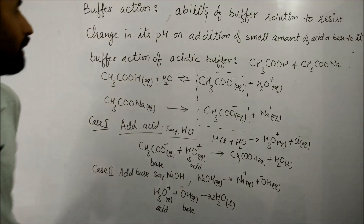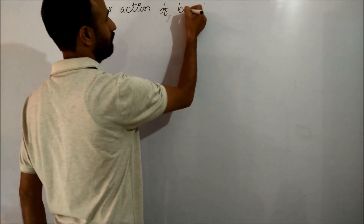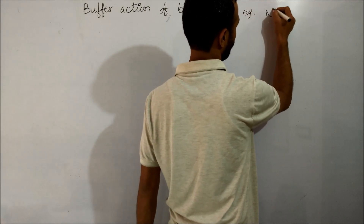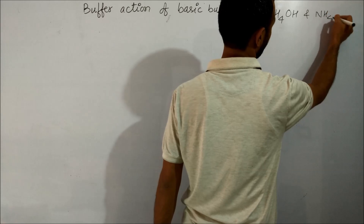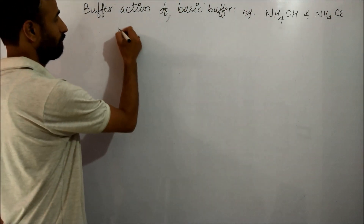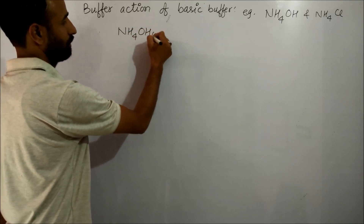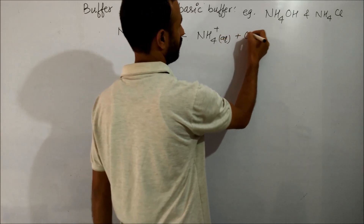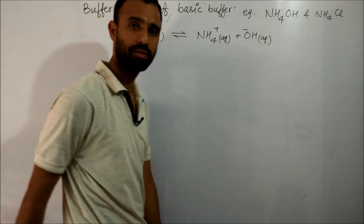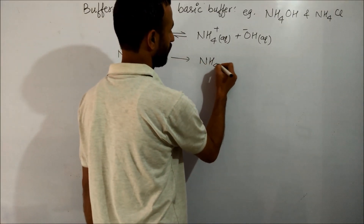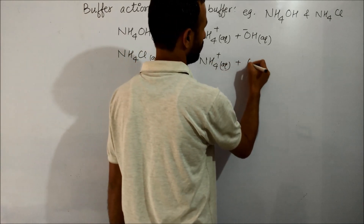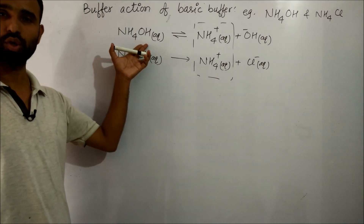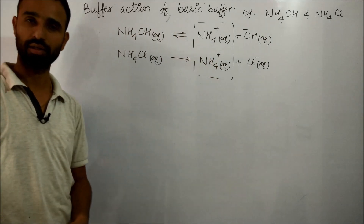Now let us take an example of basic buffer — buffer action of basic buffer. For example, ammonium hydroxide plus ammonium chloride. Ammonium hydroxide is a weak base; it gives NH4+ and OH- ions. NH4Cl is a strong electrolyte; it gives NH4+ and Cl- ions. Again, there is a common ion, and due to the common ion effect, dissociation of the weak base is suppressed. Again, this is an example of the common ion effect.